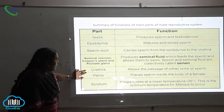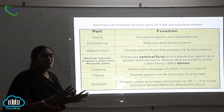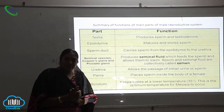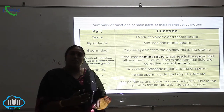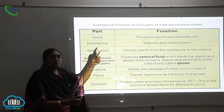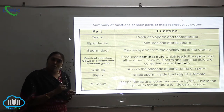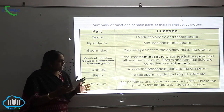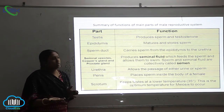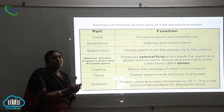Next is the urethra. What is the function of the urethra? It allows the passage of both urine and sperm. The urethra is that part of the male reproductive system which helps both in excretion and reproduction — it allows both urine and sperms.